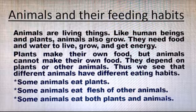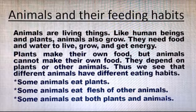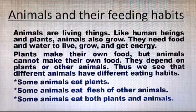First we will see animals and their feeding habits. Animals are living things. Like human beings and plants, animals also grow — they need food and water to live, grow, and to get energy. As we learned in our previous lesson, they are also living things. Same like us, they also need food and water to grow. Plants make their own food, but animals cannot make their own food. They depend on plants or other animals. Thus, different animals have different eating habits.